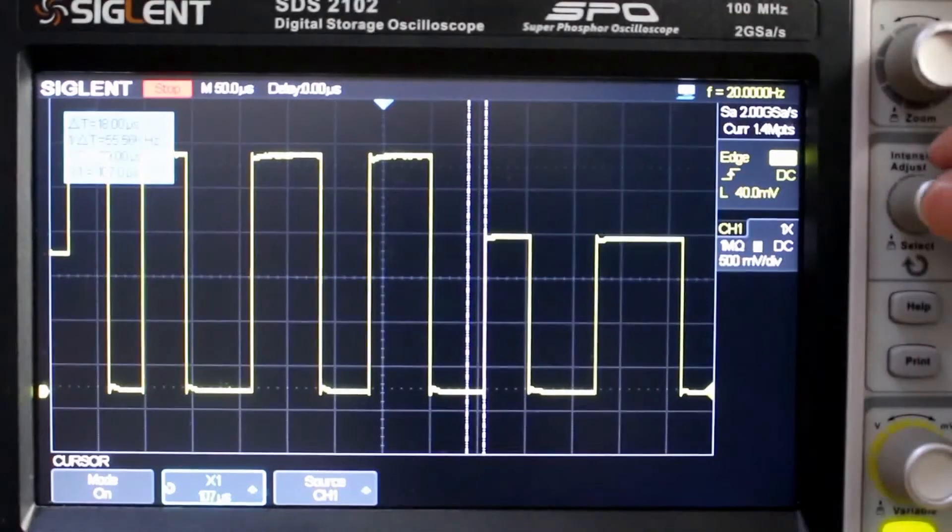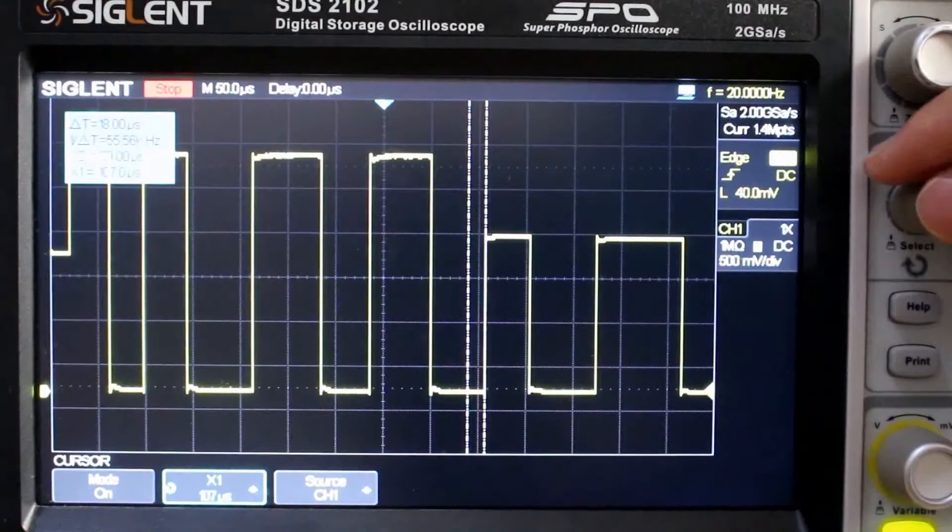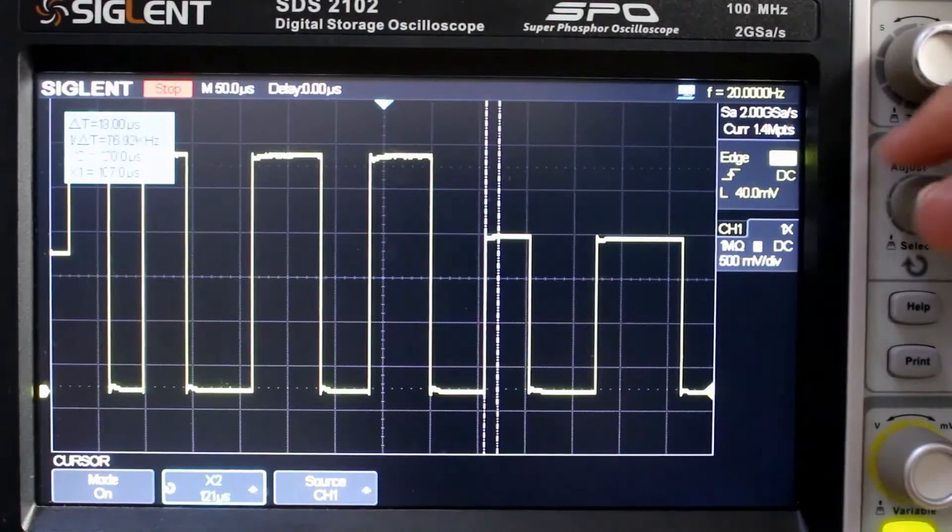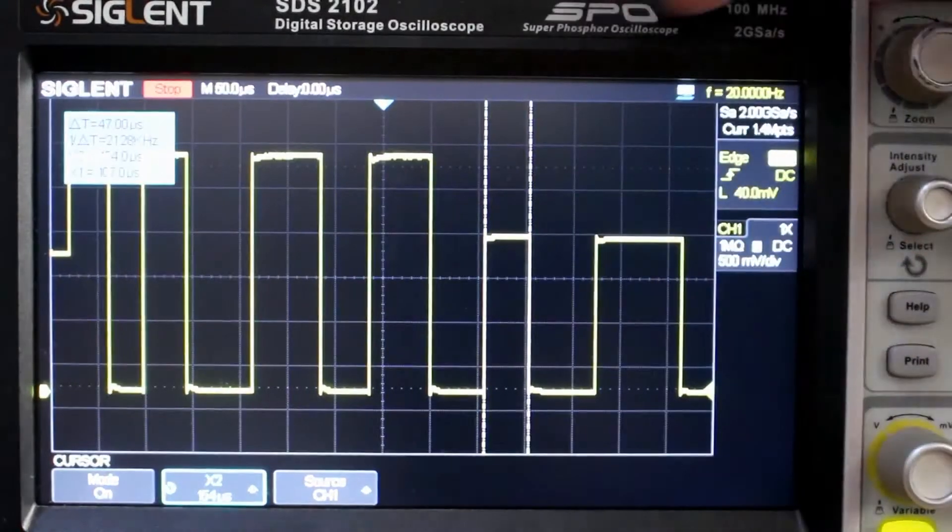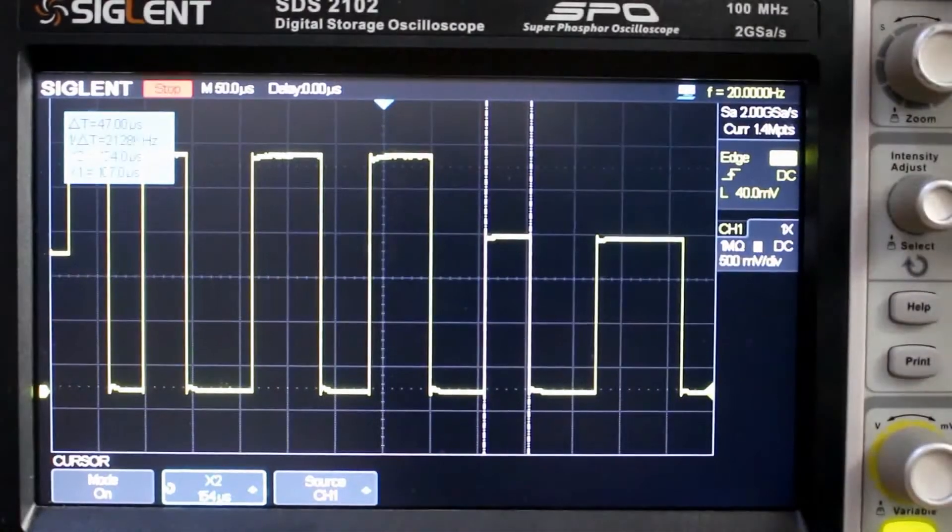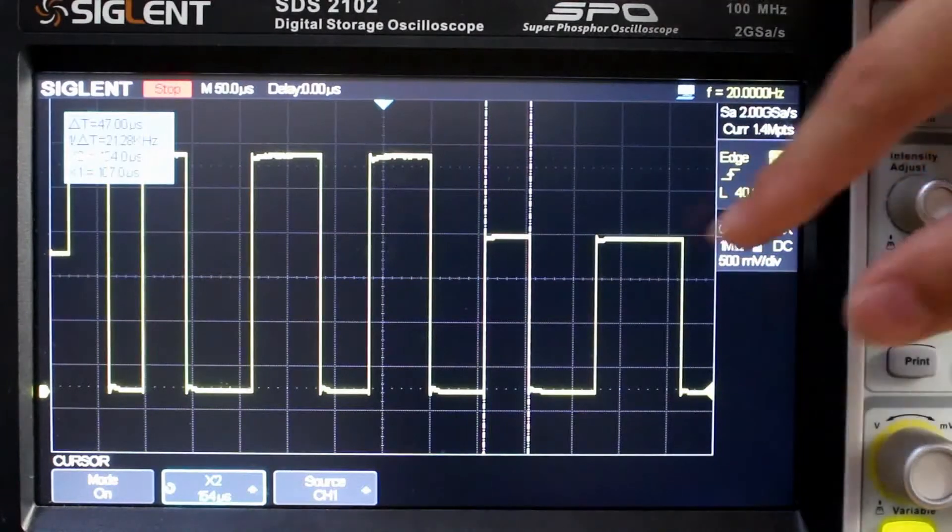Okay, so we're moving the cursors right now because we need to measure the time of the small pulse and then the wider pulse. So that's about 47 microseconds for the small one.